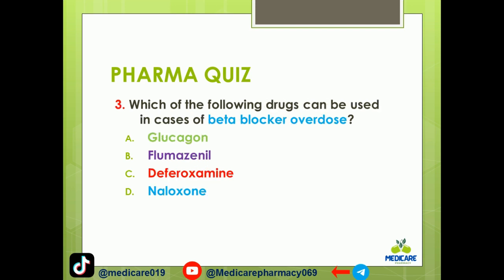Number three: which of the following drugs can be used in case of beta blocker overdose? A. Glucagon. B. Flumazenil. C. Deferoxamine. D. Naloxone. The answer is A. Glucagon.